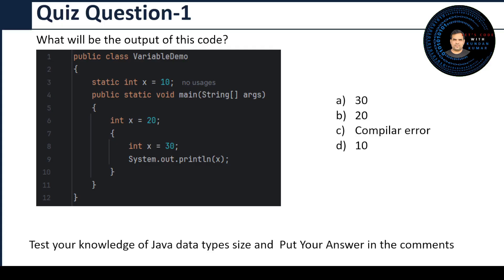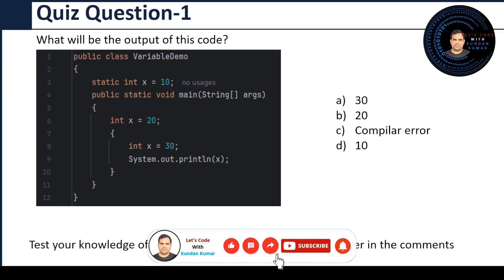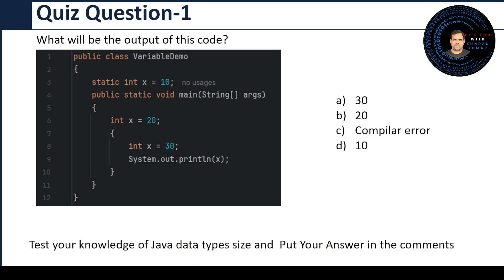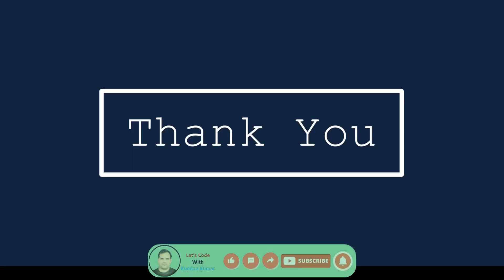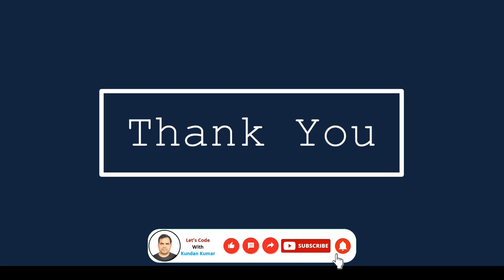Here is a quiz: you can see I have written static int x = 10 inside the class, then inside the main method int x = 20, and then inside a block int x = 30. Look at the code and try to identify the output from four options: A) 30, B) 20, C) compile error, or D) 10. Please test your skills and put your logical answer in the comments below — I am waiting. If you have not subscribed, please do subscribe, like, comment, and share. See you in the next video on typecasting and data types.